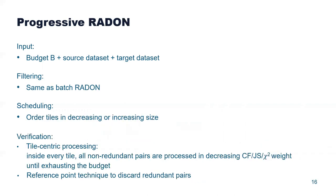We also applied the progressive algorithm to Radon. Again, the input is modified to specify the maximum number of verifications. The filtering is the same as in Radon. In scheduling, we order the tiles in decreasing or increasing size, and during verification we process the tiles in this order. Inside every tile, we aggregate all non-redundant pairs of geometries and order them in decreasing weight, executing them until we reach the predetermined budget. To avoid redundant pairs, we do not employ the hashmap but instead leverage the reference point technique that easily identifies these redundant pairs.